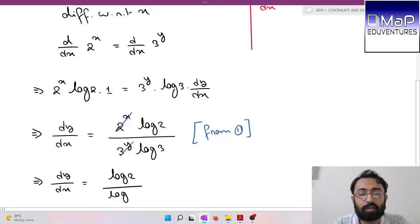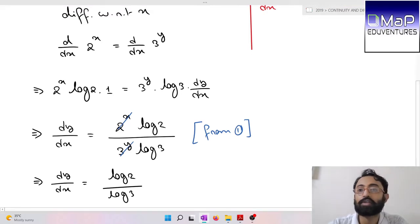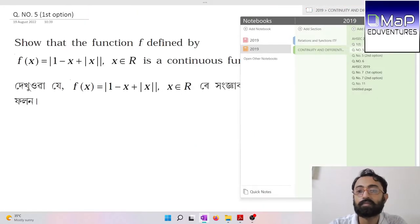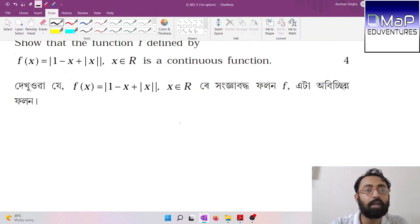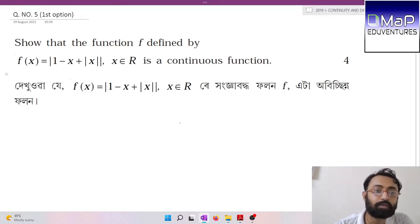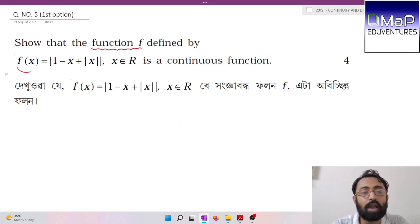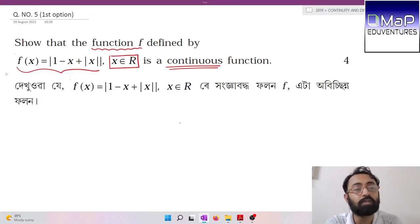Next question, number five: Show that the function f defined by f(x) = |1 - x + |x|| where x belongs to R is a continuous function. The domain of the function is already given as all real numbers.